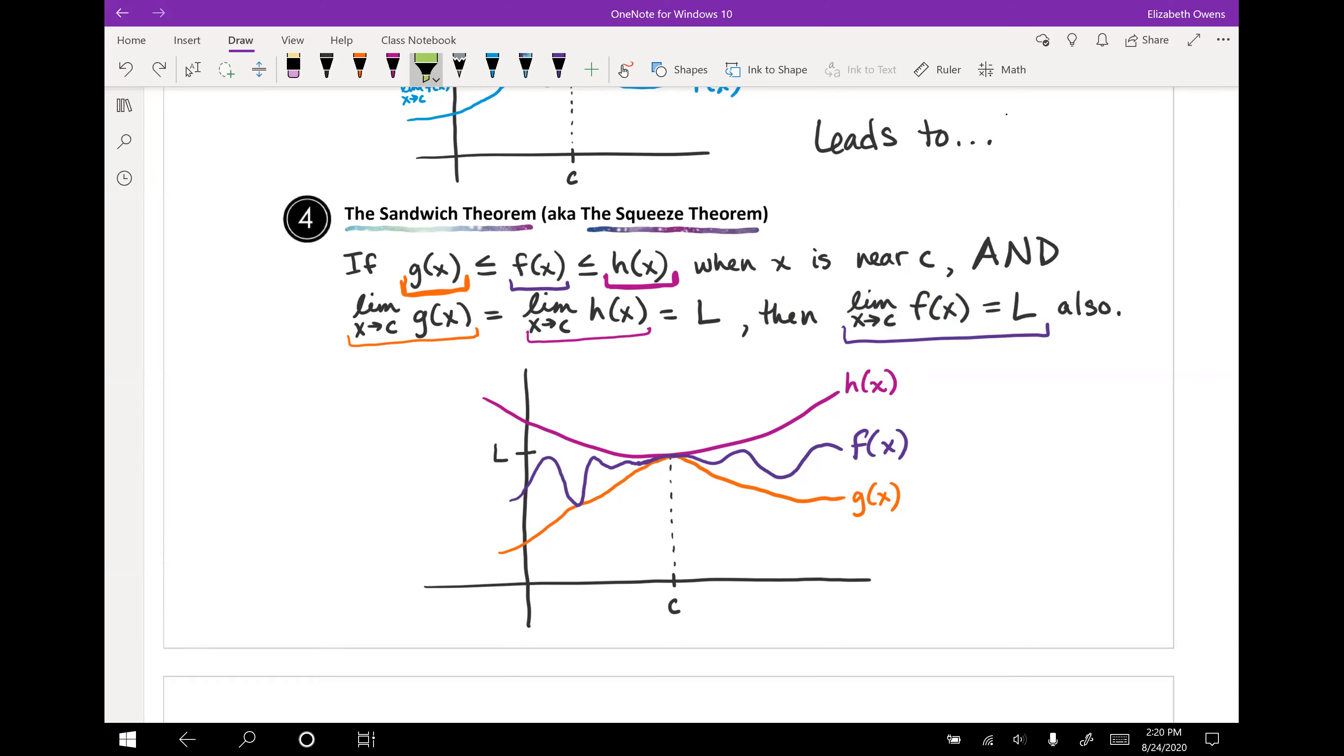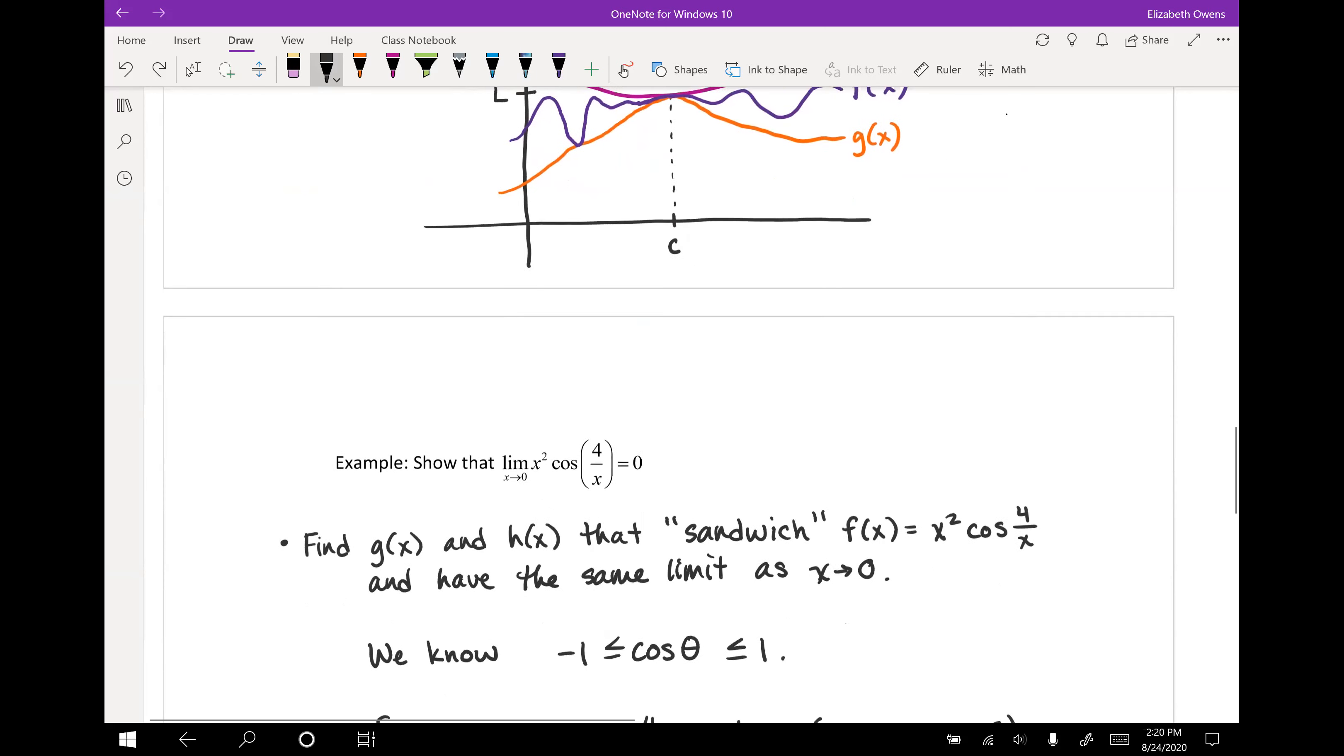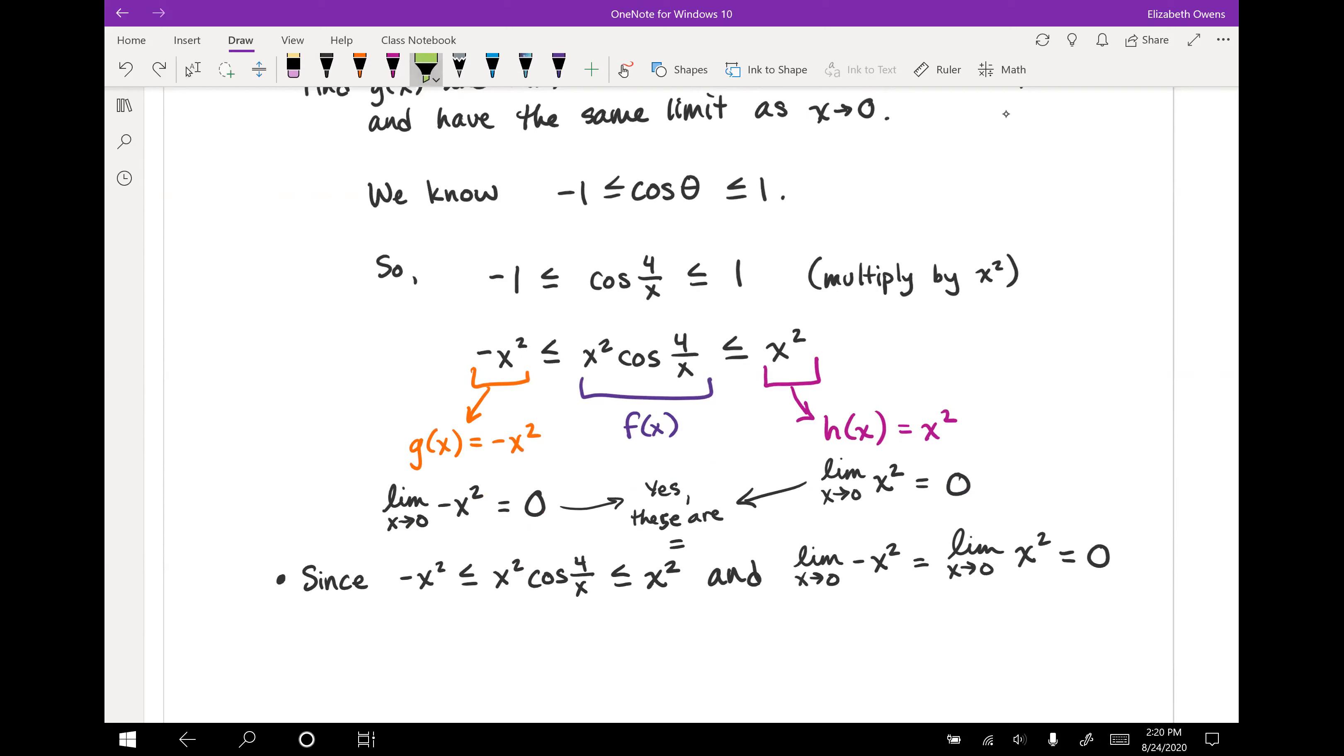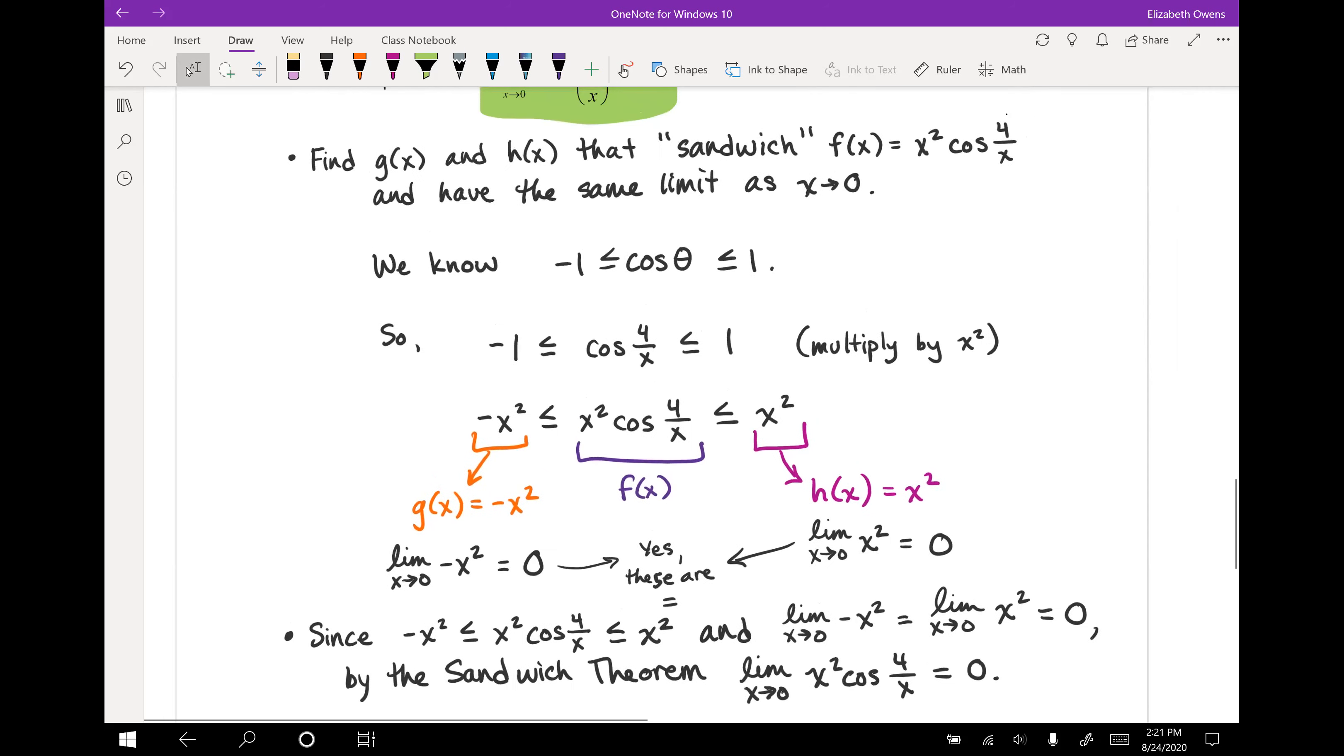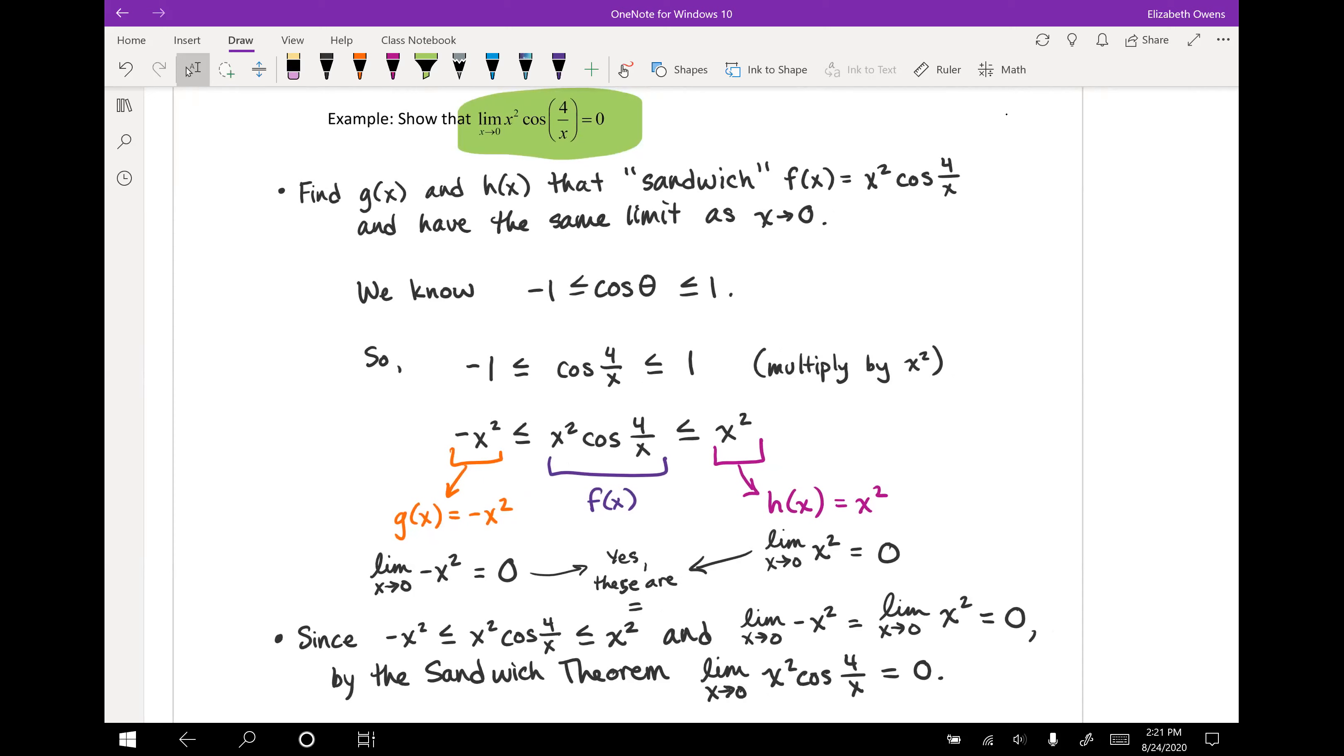So that's all we're doing when we're writing the summary here. This is true. We could have said when x is near zero, but that's okay. We're showing that the two outer functions do have the same limit, it equals zero. So we say by the sandwich theorem, this is what we're using. The limit as x approaches zero of x squared cosine four over x equals zero. That's our conclusion there. So that is how we have shown that this actually was the limit. We've come to that same conclusion by setting up our inequality sandwich and making sure the two outer functions have the same limit.